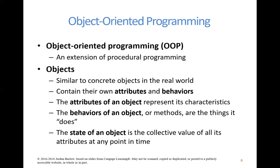An object in the real world — an apple, let's say — has attributes and behaviors. Color and size are attributes, and behaviors are the things it does, like ripening. Any object you can think of has attributes and behaviors. Similarly, the things we create using the C-Sharp language have attributes and behaviors. This is a brief history of how these programming languages came about — they came about to represent objects in the real world.